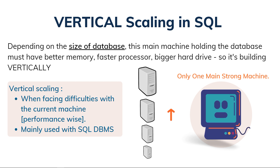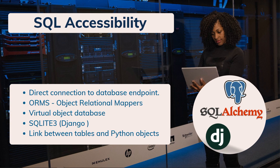In SQL, you also require a direct connection to the database endpoint. Nowadays we have ORMs — Object Relational Mappers — which create a virtual object database that can be functional within any programming language. For Python, examples include SQLite3 in the Django framework, PostgreSQL, or SQLAlchemy. They provide a link between database tables with records and fields and Python objects inside your class.